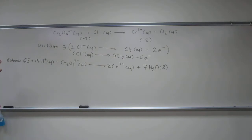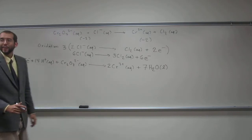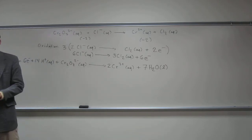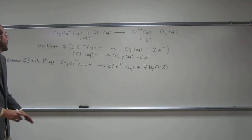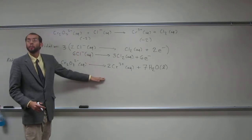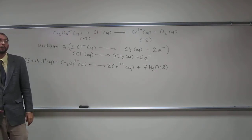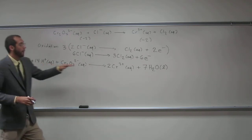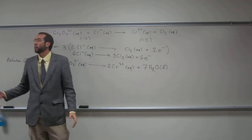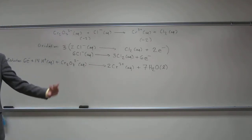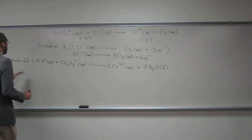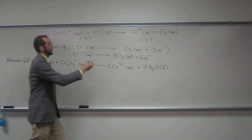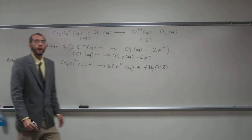The final oxidation half-reaction is going to be: 6 Cl⁻(aq) goes to 3 Cl₂(aq) plus six electrons. Now the last step is to figure out what the final reaction is, and in order to do that we have to add the two balanced half-reactions. When you're adding these two reactions, the amount of electrons should be the same on one side as the other, and since they're the same they can be cancelled out. We have six electrons on each side, so we cancel those out.